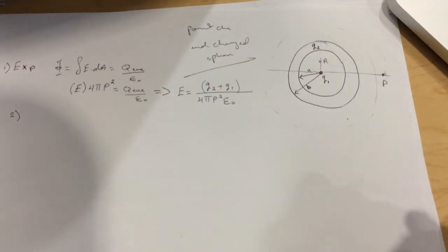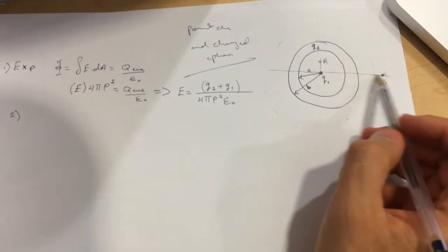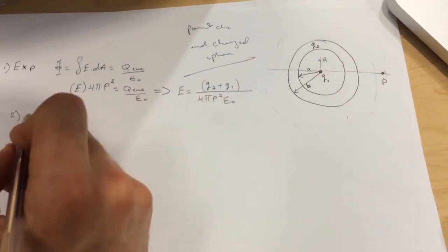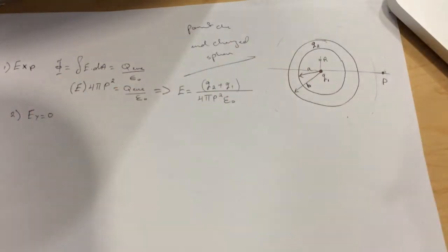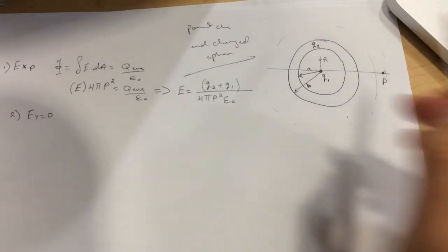Question number two: what is the y-component of the electric field? The electric field will just be pointing in the x-direction, so E_y will be equal to zero. What is the value of the y-component of the electric field?